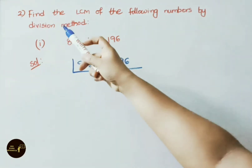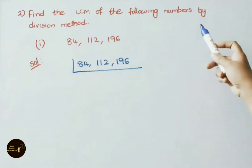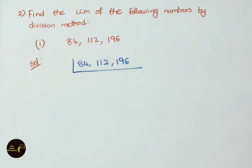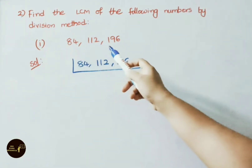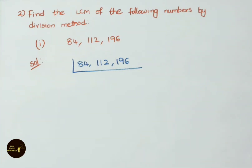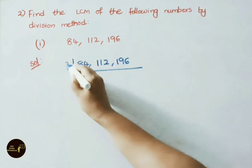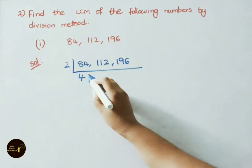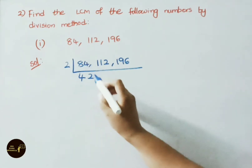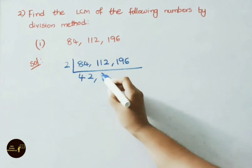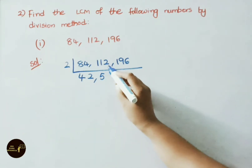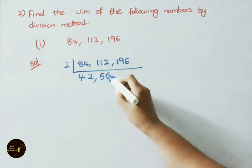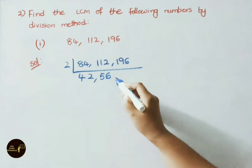Find the LCM of the following numbers by division method. First sum: 84, 112 and 196. We have to find LCM for these 3 numbers using division method. Divide by 2: 2 × 42 = 84, 2 × 56 = 112, 2 × 98 = 196.